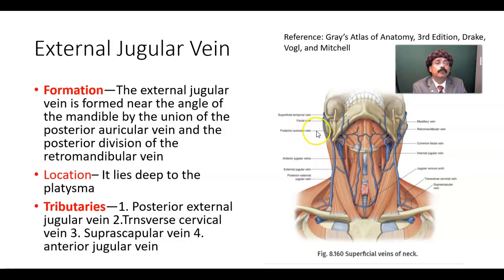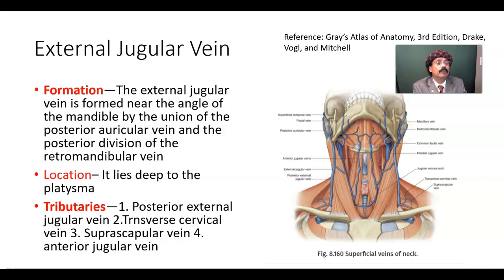This is the posterior auricular vein. This is the external jugular vein. This is the retromandibular vein, which is formed by the union of the maxillary vein and the superficial temporal vein.